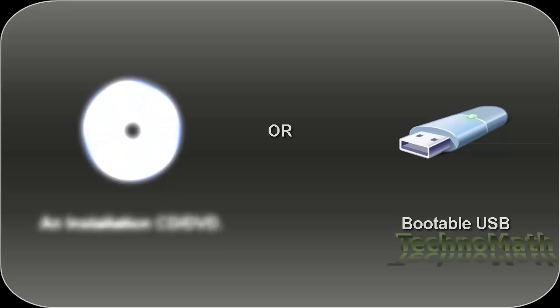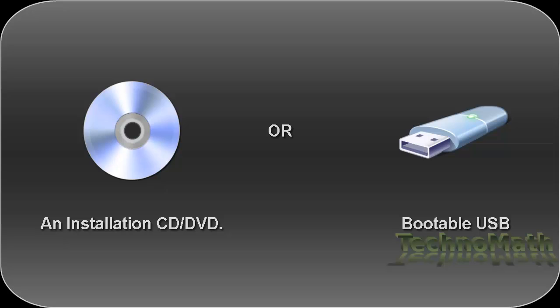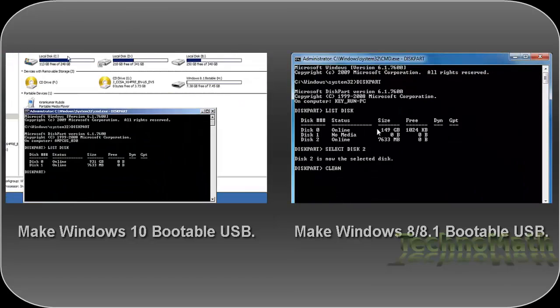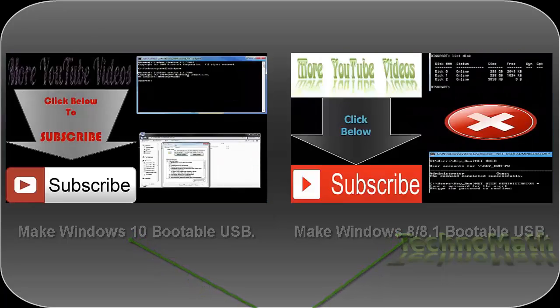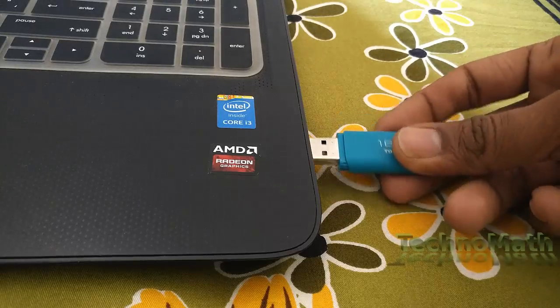If you don't have an installation CD or DVD, you can easily download the ISO image of the same operating system from the Microsoft website, write it to disk, and make it bootable. If you want to use a bootable USB pen drive, make sure you use an 8 GB USB. If you want to learn how to make a USB bootable, you can watch the videos linked in the description. In this video, I'm going to show the process using USB, and the whole process is the same with a CD or DVD.